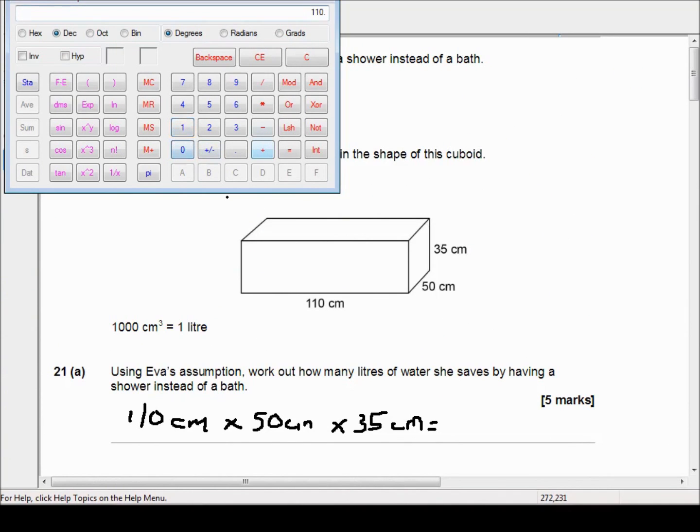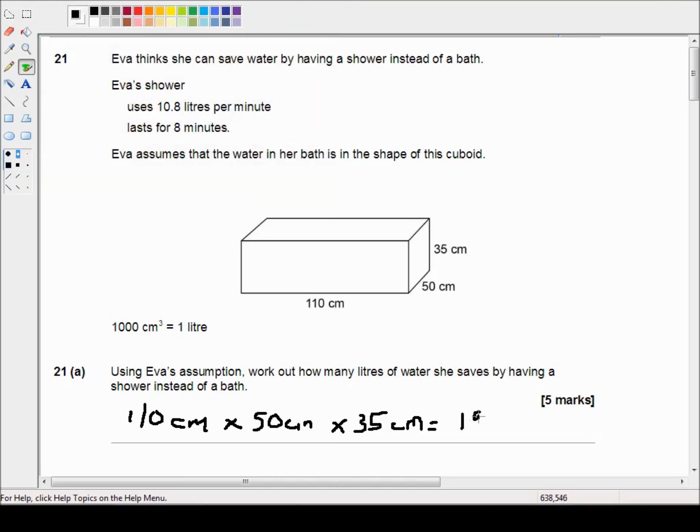110 times 50 times 35, and that's equal to 192,500. That's 192,500 centimeters cubed.